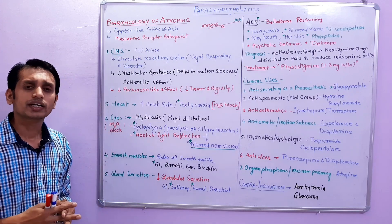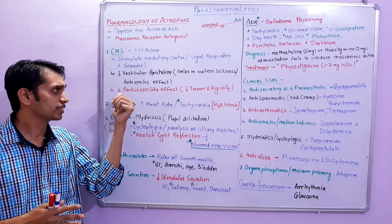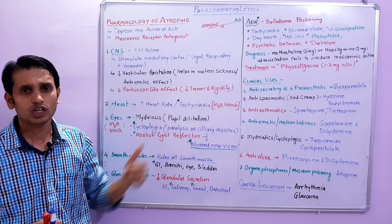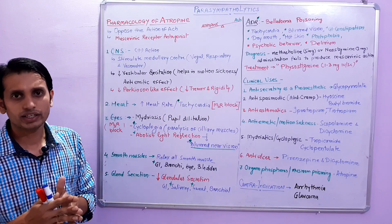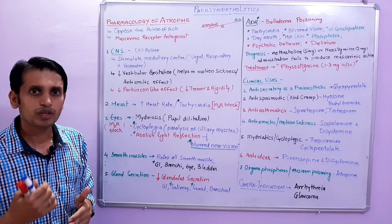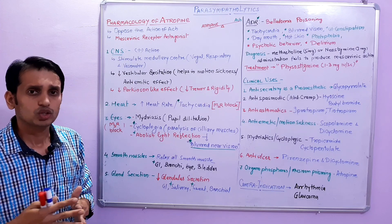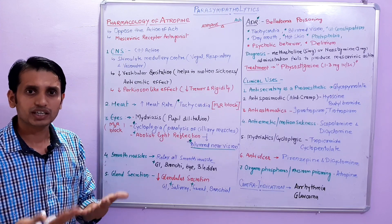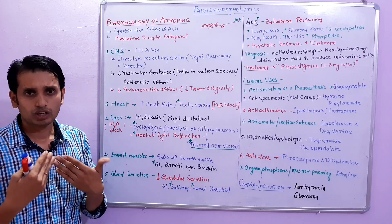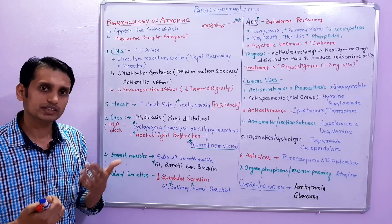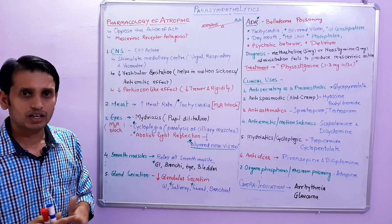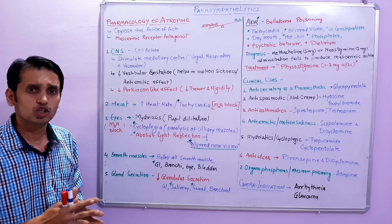Atropine decreases Parkinson-like effects such as tremor and rigidity. If you have a cholinergic excess effect, we can give a centrally acting anticholinergic drug like procyclidine, which will decrease those Parkinson-like effects.